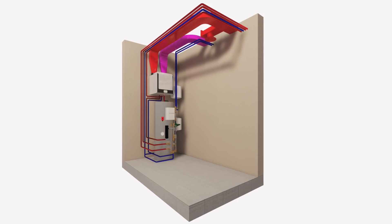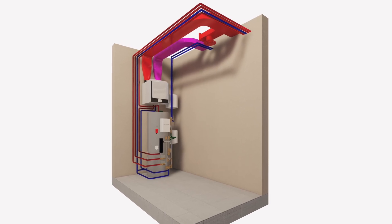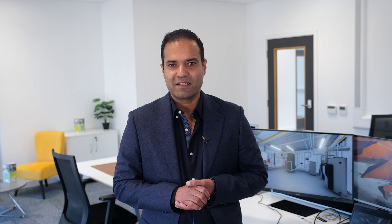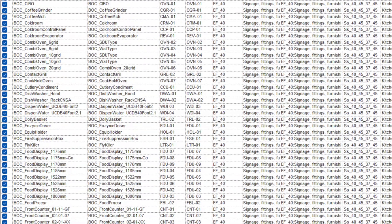Another really important question we hear is: what standards and classification systems do you follow? We follow industry-recognised standards to make sure your product's BIM content is usable, shareable and fully compliant. That includes NBS standards, COBie for data exchange, and UniClass classification, so your product fits into UK-based projects.